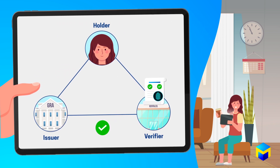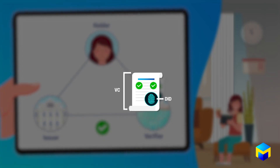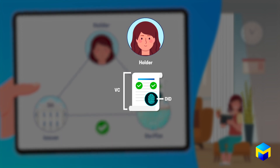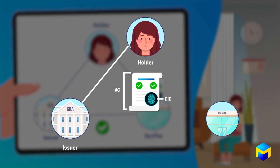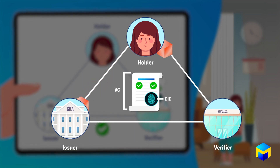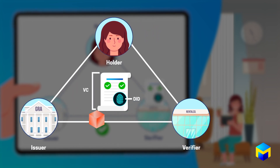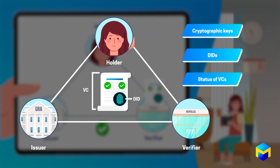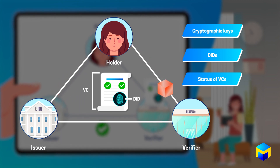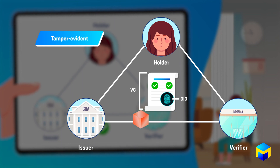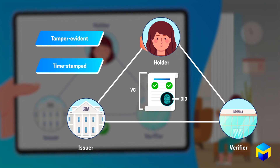DIDs and VCs provide a shared foundation of trust between you as the holder, the GRA as the issuer, and RentalCo as the verifier, with blockchain as the necessary decentralized trust anchor to maintain the relationships between cryptographic keys, DIDs, and the status of VCs. Since the entire exchange is recorded, all three parties enter into a tamper-evident timestamp transaction in which they mutually establish and verify a shared set of truths.